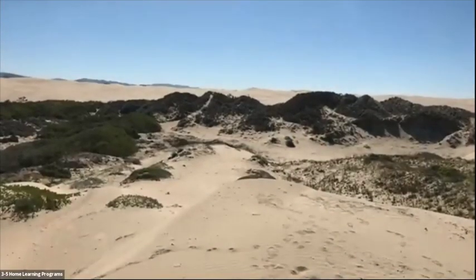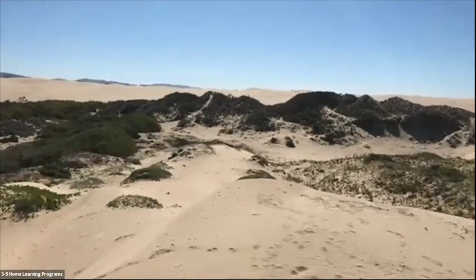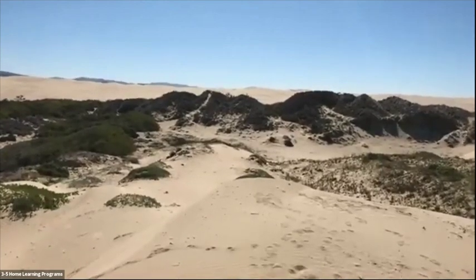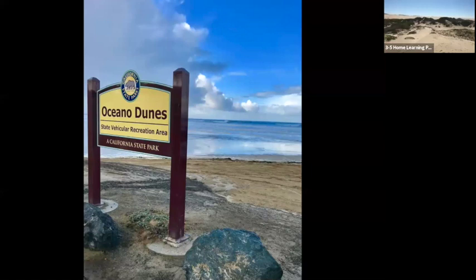My name is Ben, I'm here at the Oceano Dunes. Today we're going to talk about the rock cycle, animal adaptations, and plant adaptations that allow animals and plants to live in this very unique habitat. I'm going to share a map so you'll see exactly where this park is. Here's our park sign — the Oceano Dunes State Vehicular Recreation Area — and here's a map of the US.